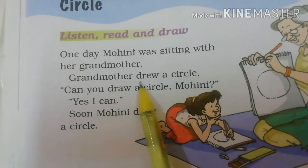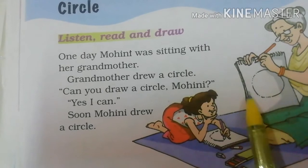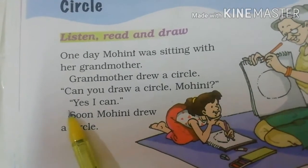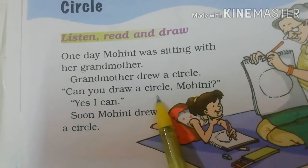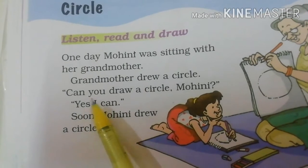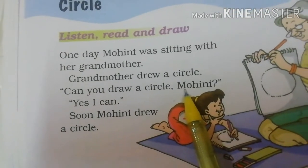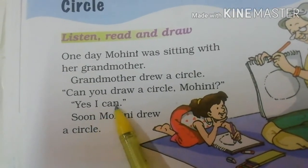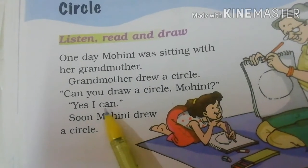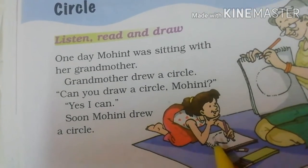Grandmother drew a circle. Grandmother ne ek circle banaya. Can you draw a circle, Mohini? Mohini, kya tum circle bana sakti ho? Yes, I can. Haan, mein bana sakti hun.